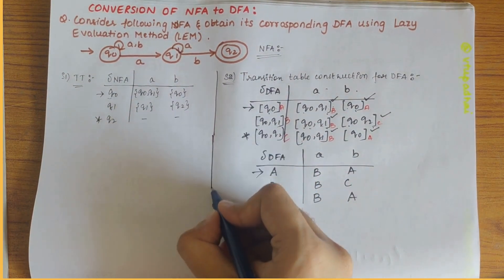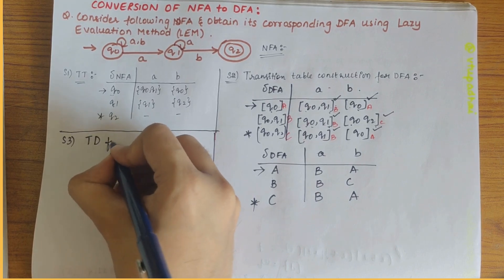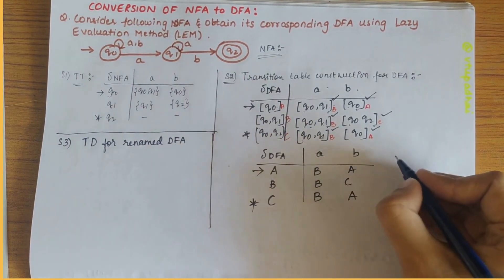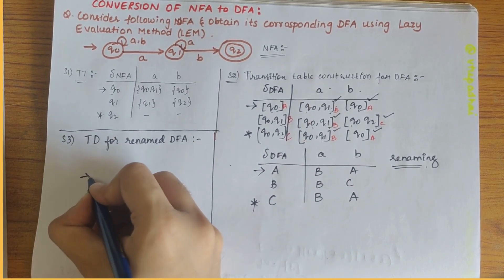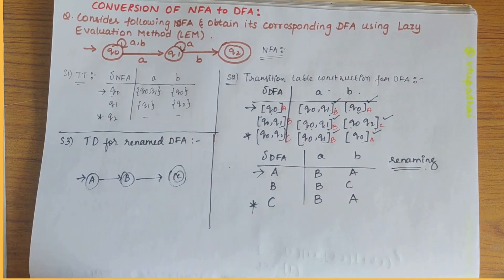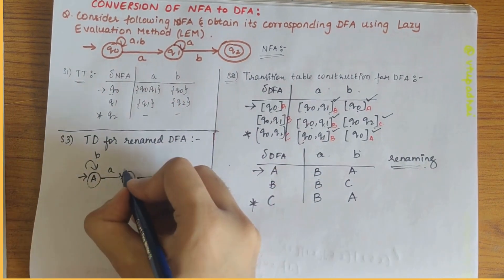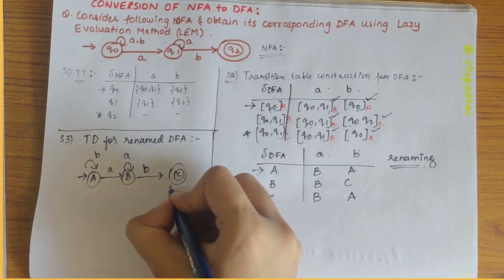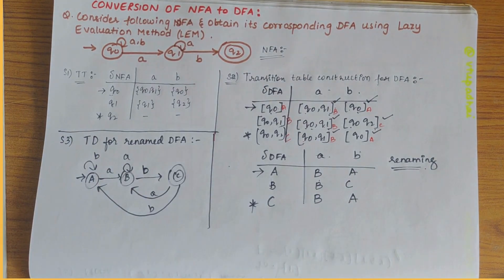Step 3 is the transition diagram for the renamed DFA. A is the start state and C is the accepting state. A on a goes to B, A on b loops back to A; B on a goes to B, B on b goes to C; C on a goes to B, C on b goes to A.